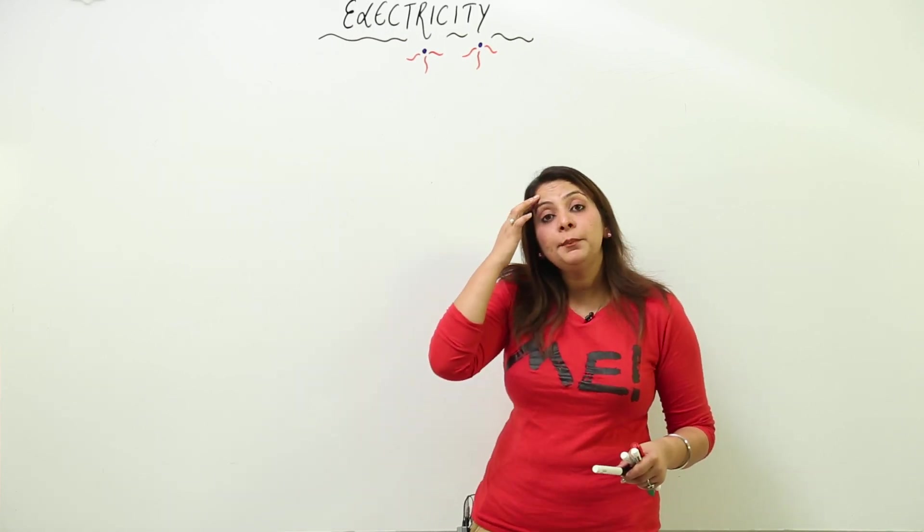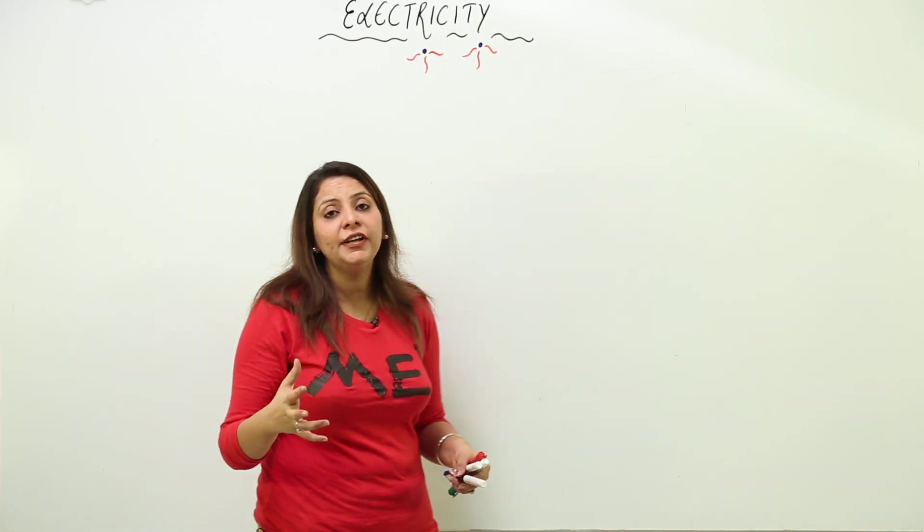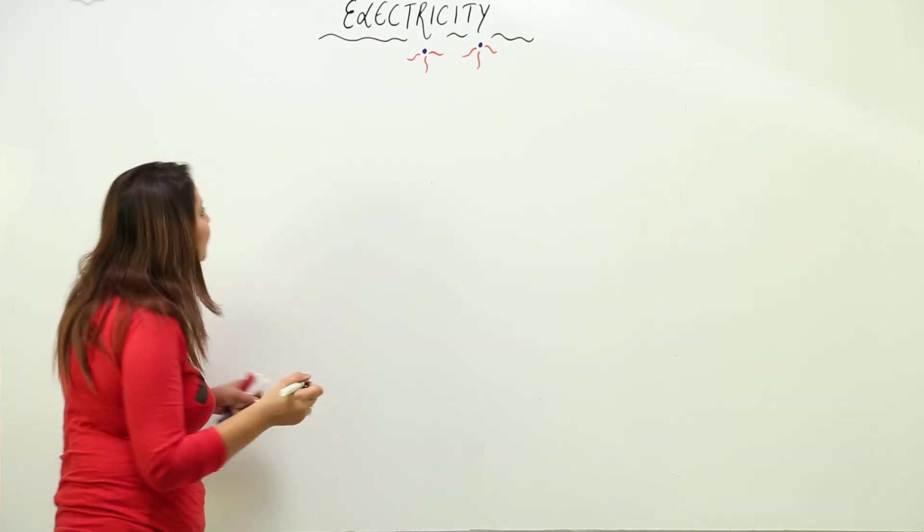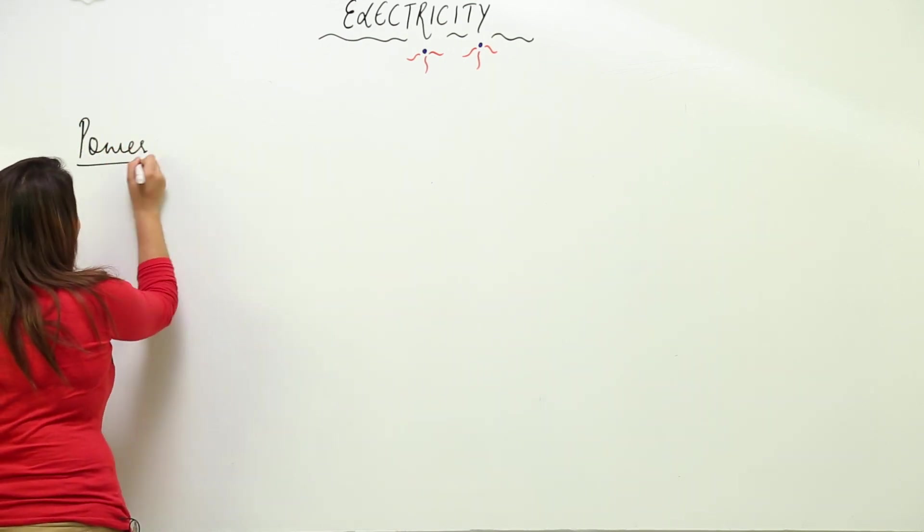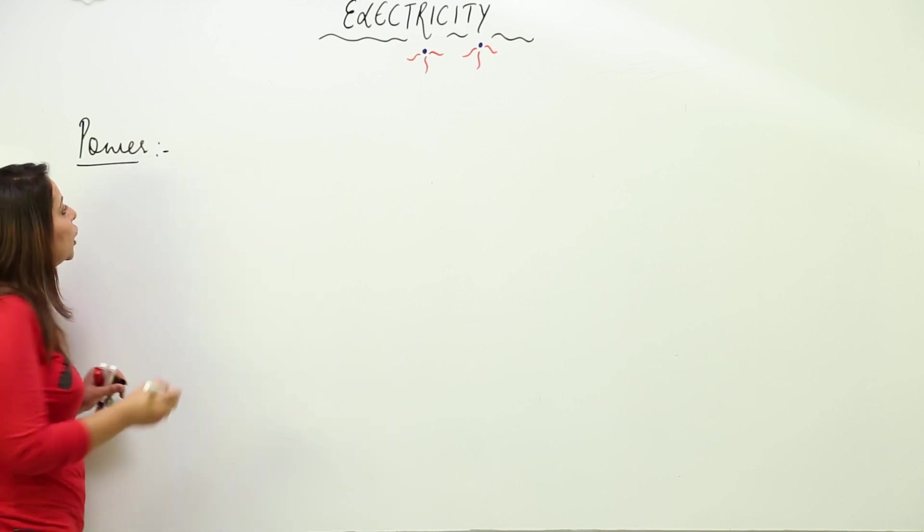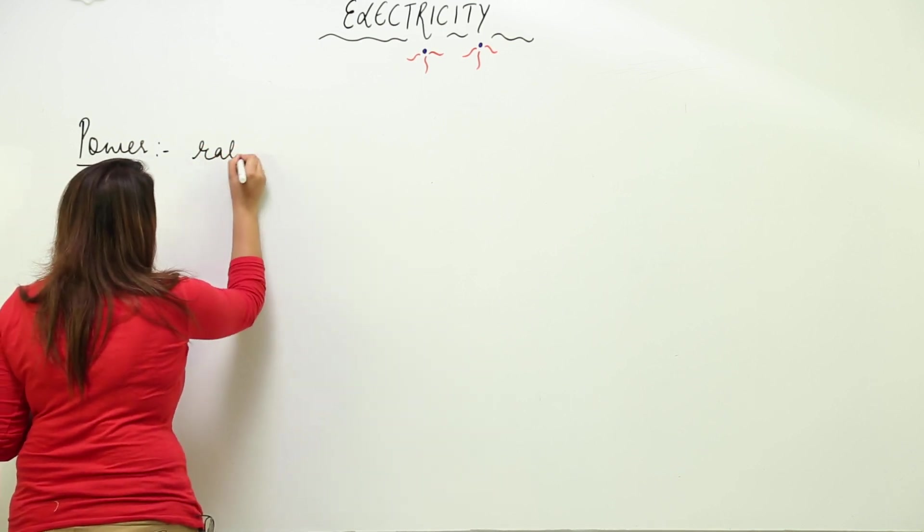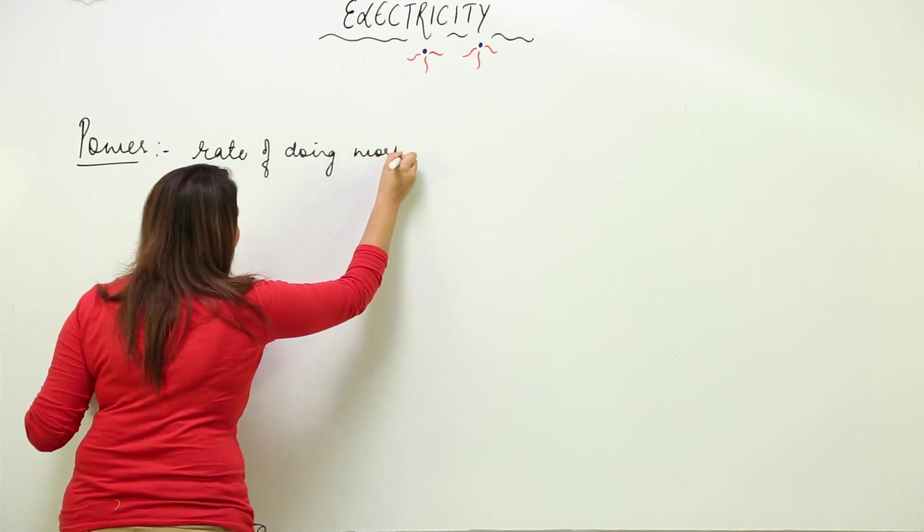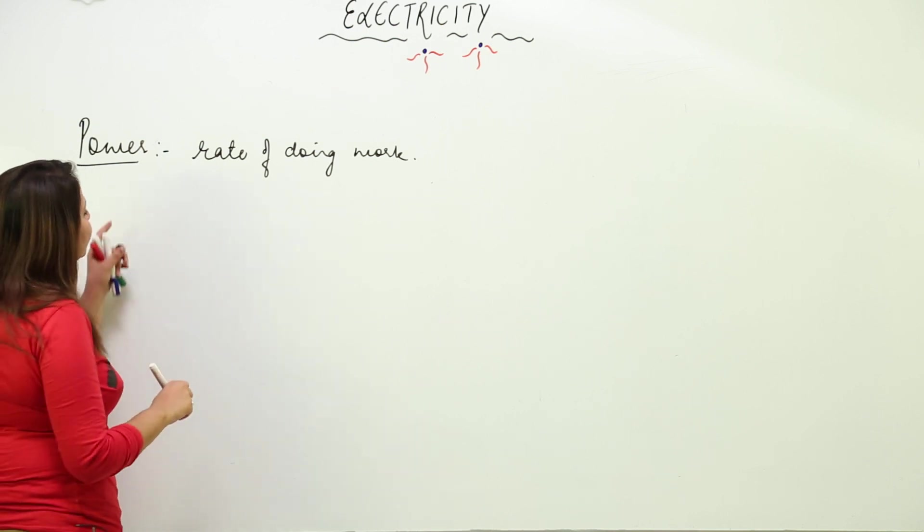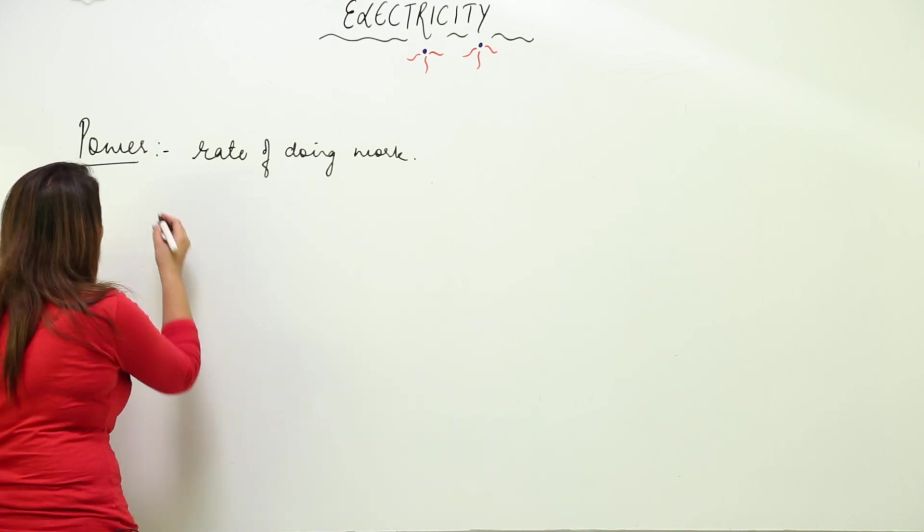Now we are going to take up power. As we all know, every appliance has a certain power. So now it's time to understand the power of appliances and what it means. Power is the rate of doing work.